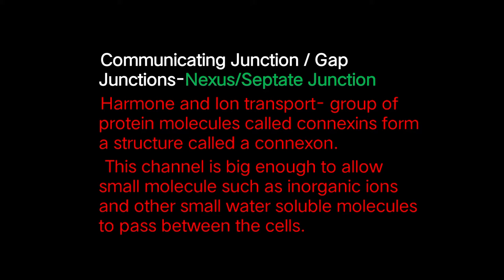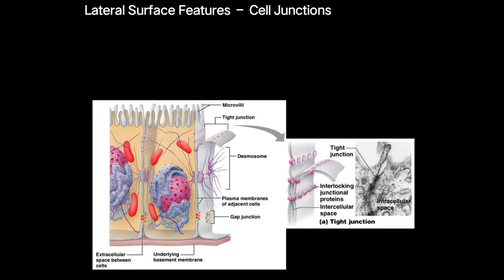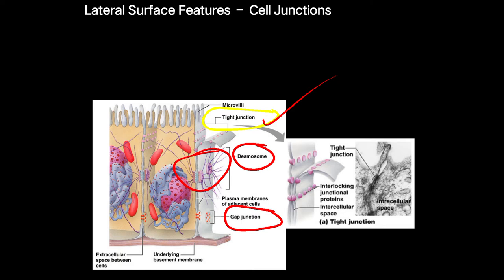The communicating or gap junction, also called nexus or septate junction, allows hormone and ion transport. The protein connexin forms a structure called connexon. This channel is large enough to allow small molecules such as inorganic ions and other small water-soluble molecules to pass between cells. In diagrams we can see the tight junction at the top, desmosomes as the adherence junction in the middle, and the gap junction or nexus at the bottom through which material easily passes.